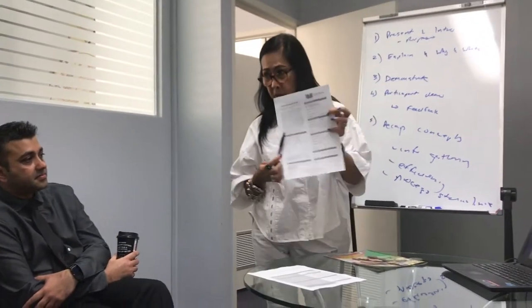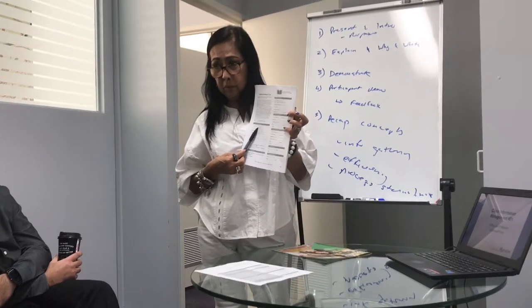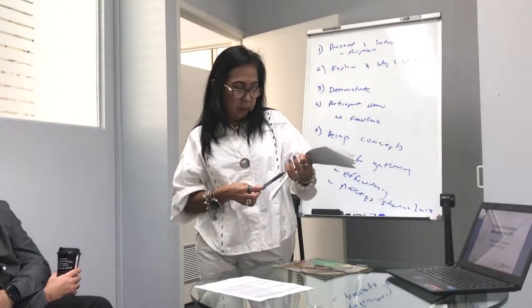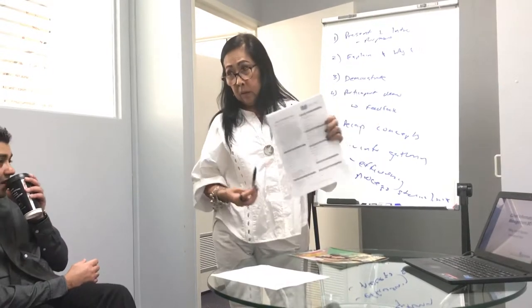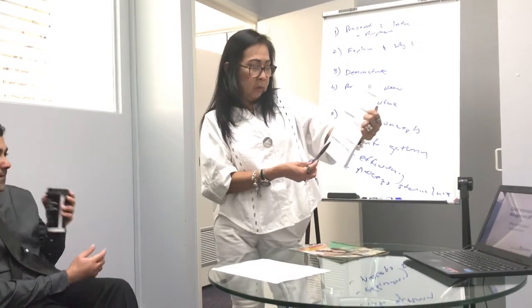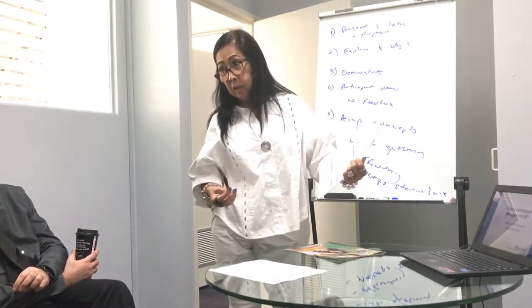In this enrollment form, the first question is the course — we need to know and ask the student what course they are applying for. Next it says agent information. We are student agents, so we have to fill that in to get the commission.